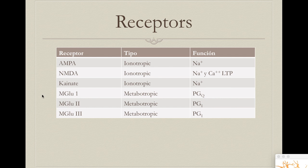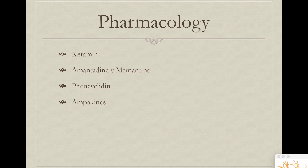We also have metabotropic receptors in the glutamate receptor family. We mainly have mGluR1, a metabotropic receptor that couples to a G protein subunit Q — a very important family of second messengers. We have mGluR2, which is also metabotropic and couples to PGI, making it an inhibitory receptor that diminishes activity in neurons. And we have mGluR3, also metabotropic and inhibitory because it also couples with PGI.